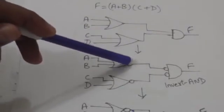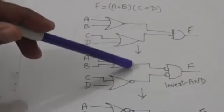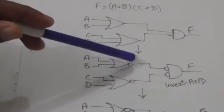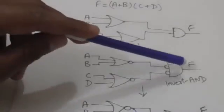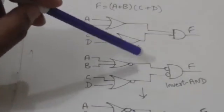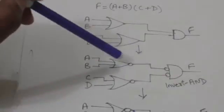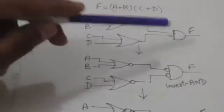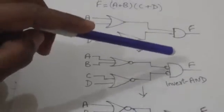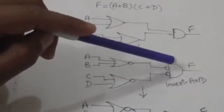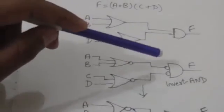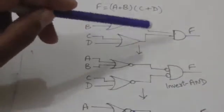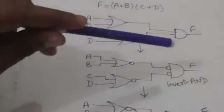We know that the complement of a complement restores the original value. So here I have put two circles: one at the output of this OR gate, which will perform the complement of the output of this OR gate, and a second at the input of this AND gate. Here we get the complement of the output of this OR gate, and then it is complemented again before going as input to the AND gate.